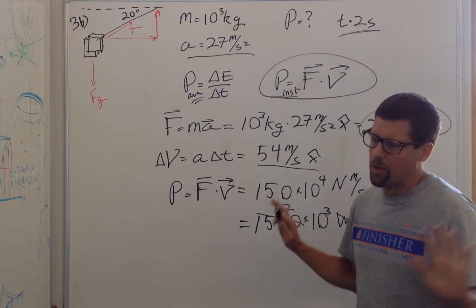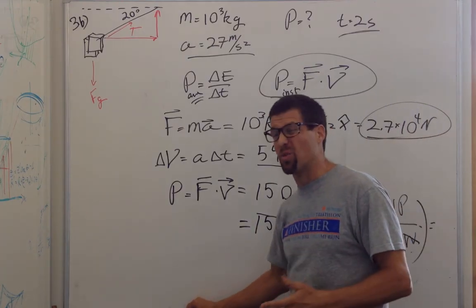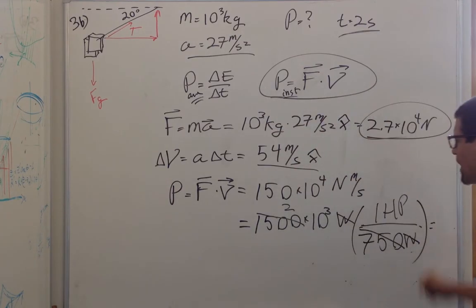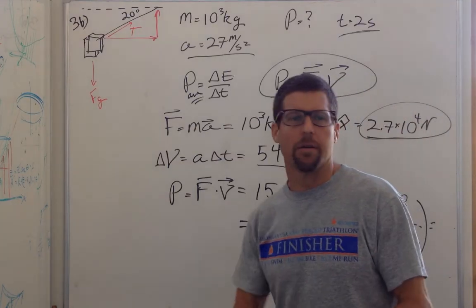So a normal car is between 100 to 200 horsepower maybe. So 2,000 horsepower, that's a pretty unreal car.